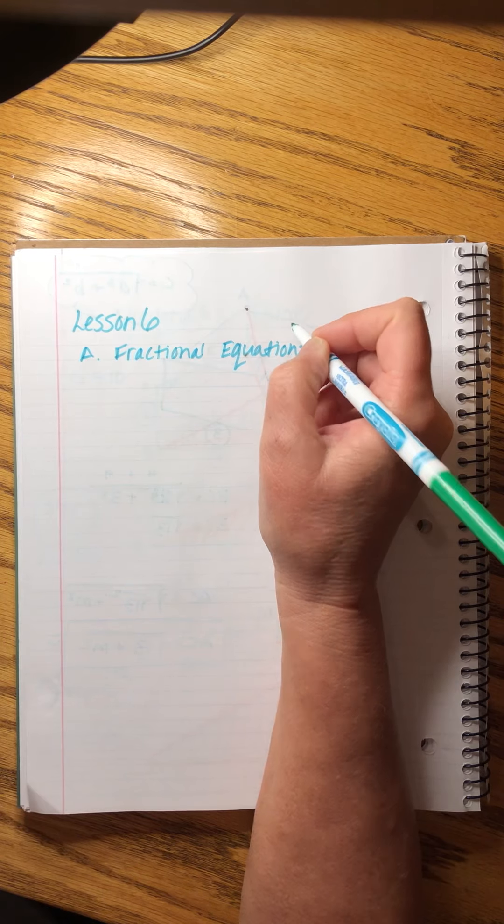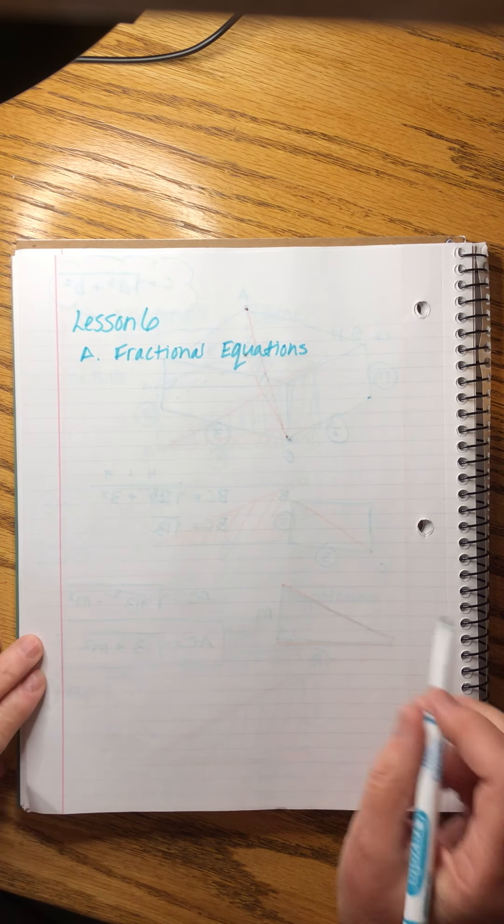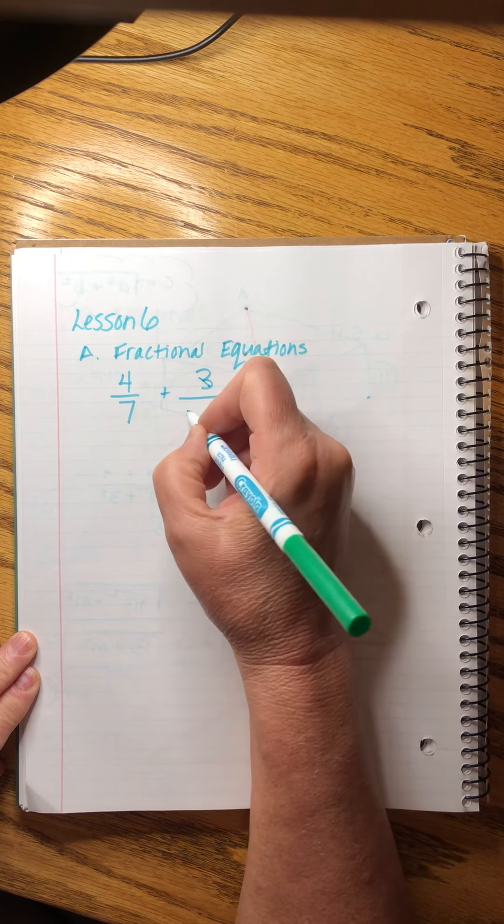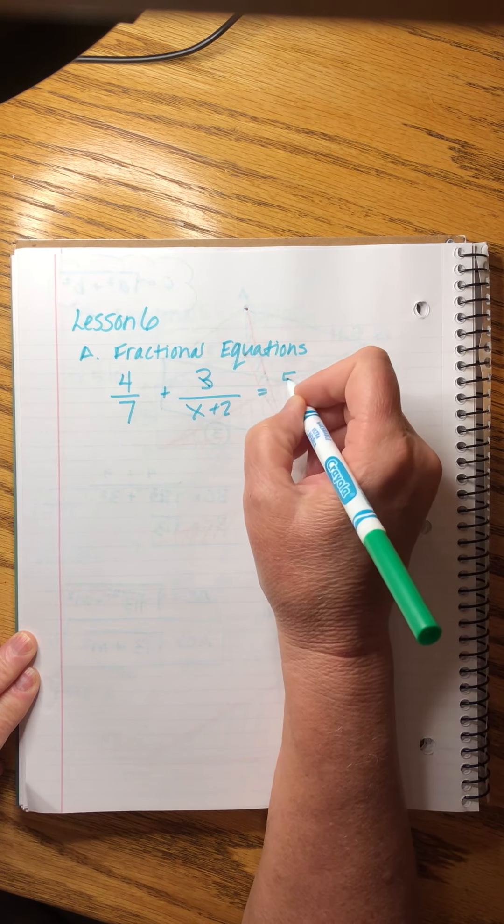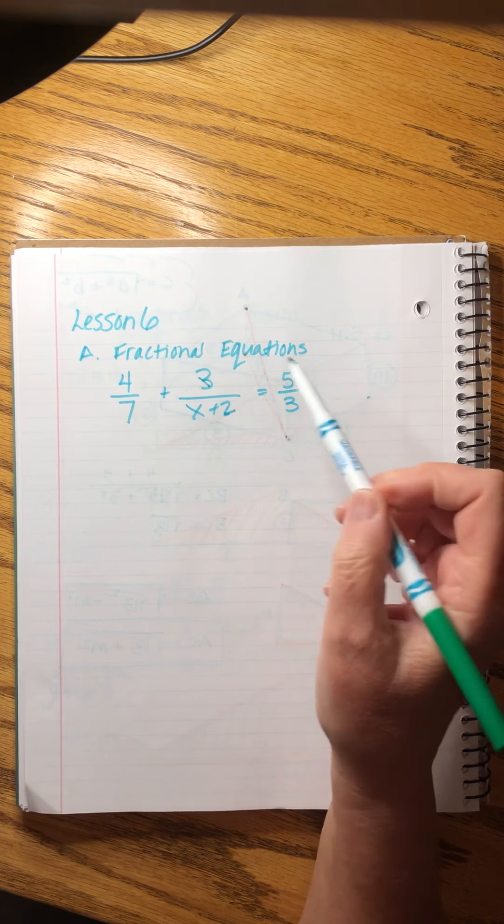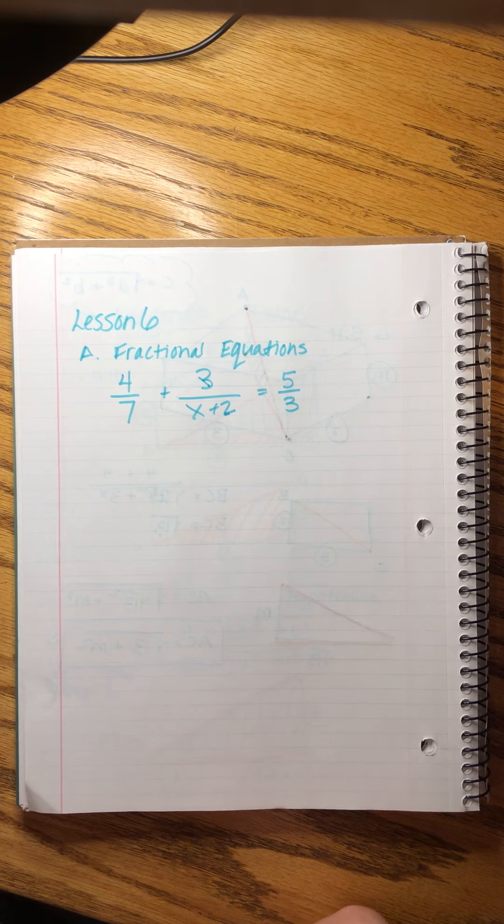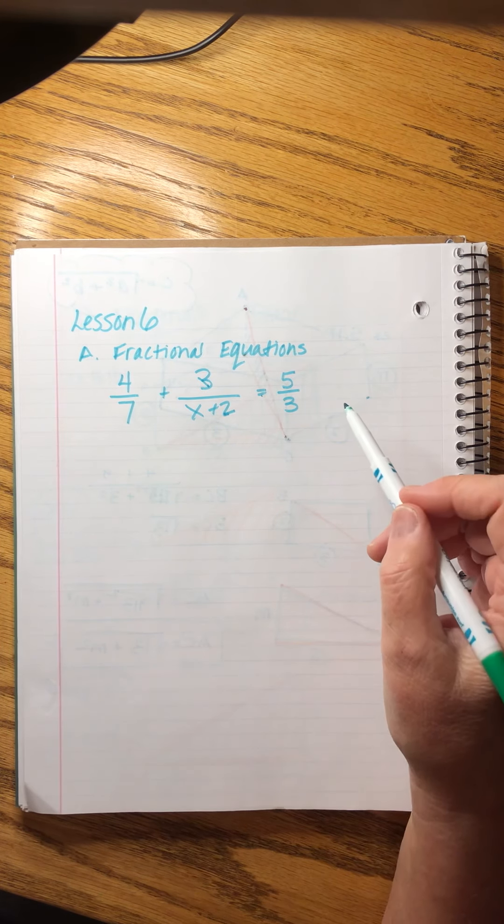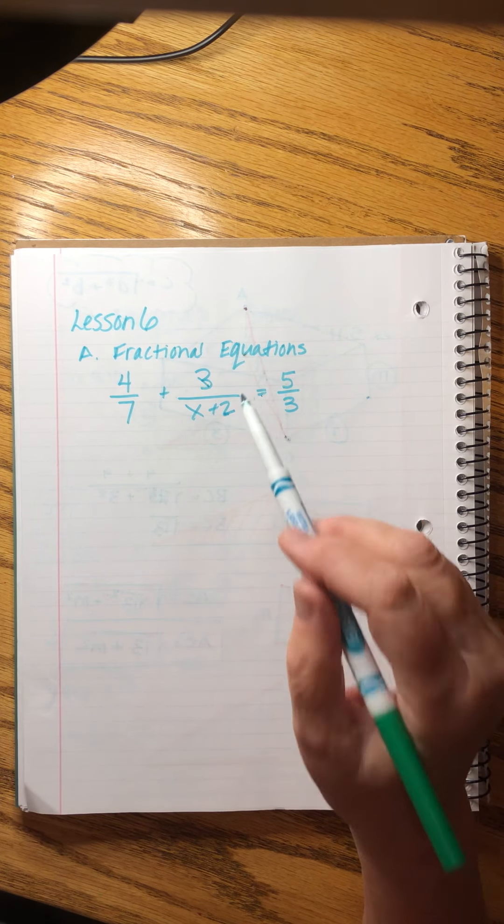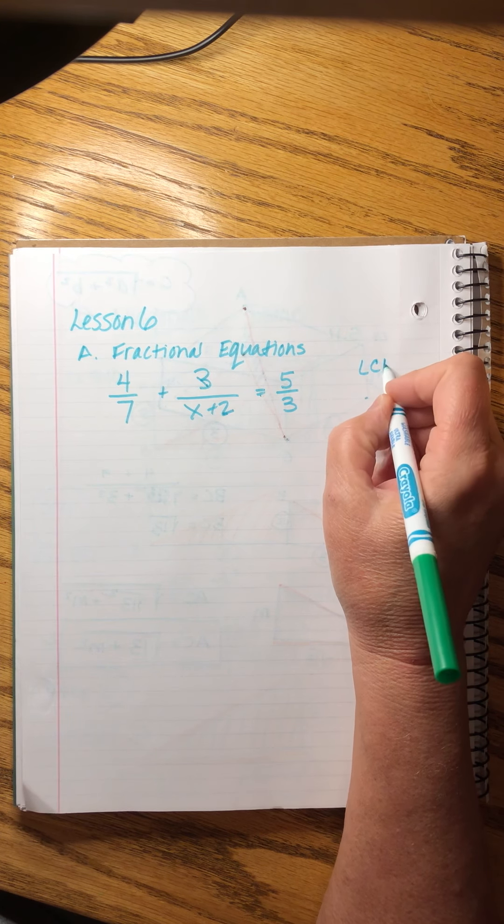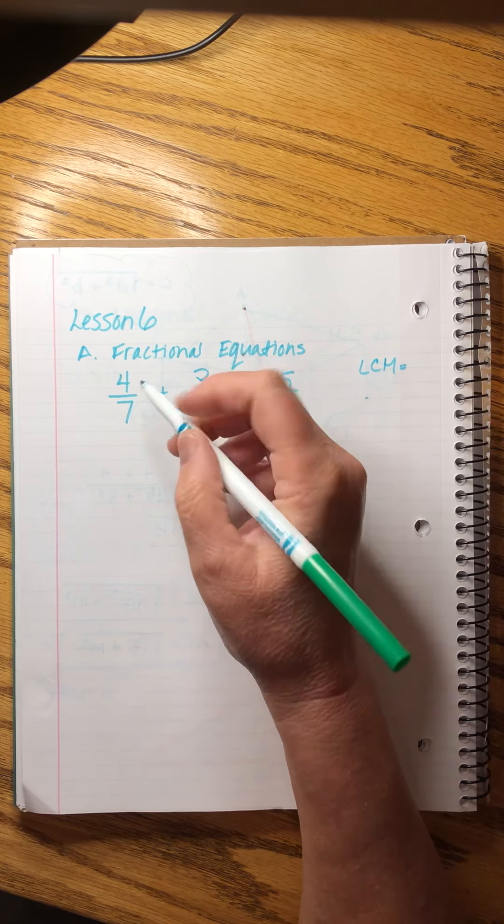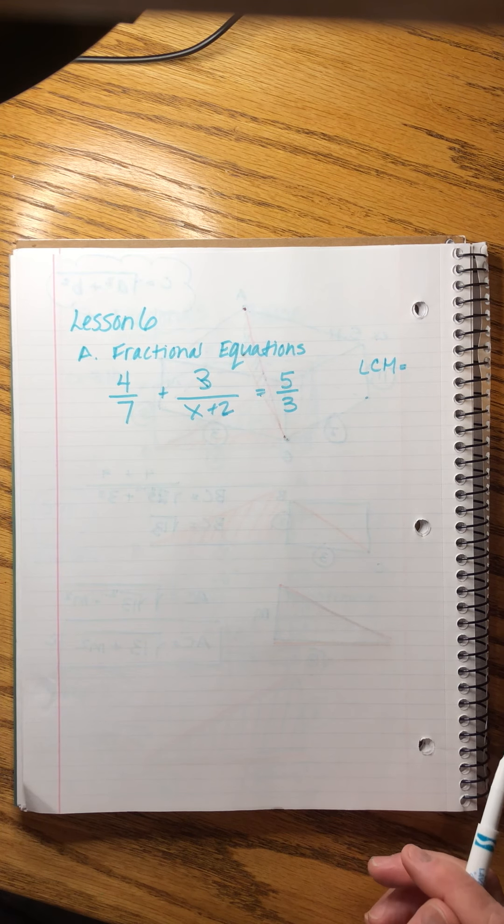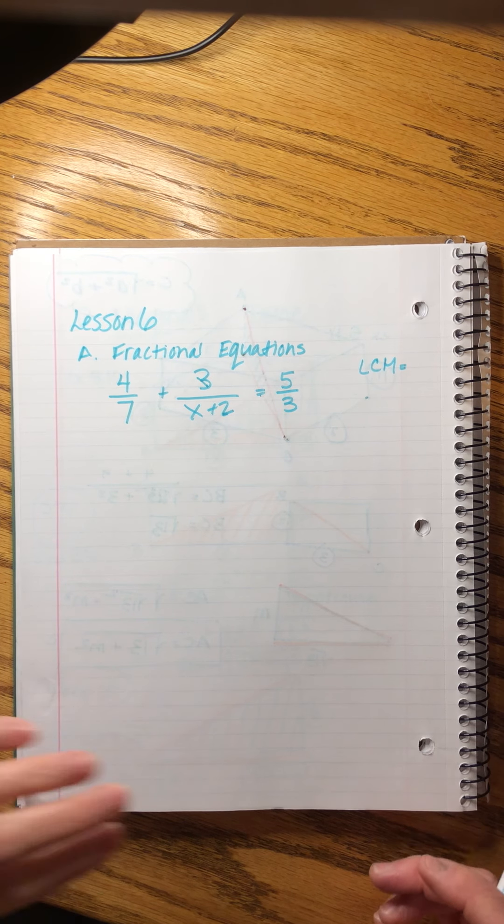Hopefully this is all review. I know it is because I know you guys all did Saxon last year. So we're asked to solve something like this. Four over seven. What we have here is an equation with fractions. The rule here is that when we have an equation, we can make the denominators go completely away. With an expression, you can only combine. But with an equation, we can make them go away. And the way that we do that is first we calculate the least common multiple. And then we're going to multiply every term by the least common multiple. And it will cancel out the denominators. And that will be a happy day.